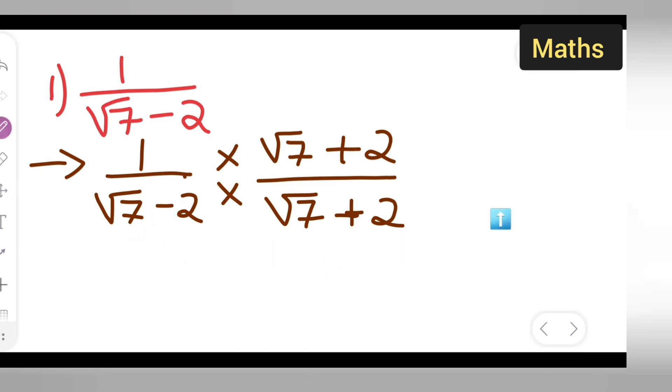Now this is equal to what you will have to multiply: root 7 plus 2 multiplied by 1 will be the same thing, root 7 plus 2. Upon now you will get root 7 multiplied by 7, which is 49, minus 4.